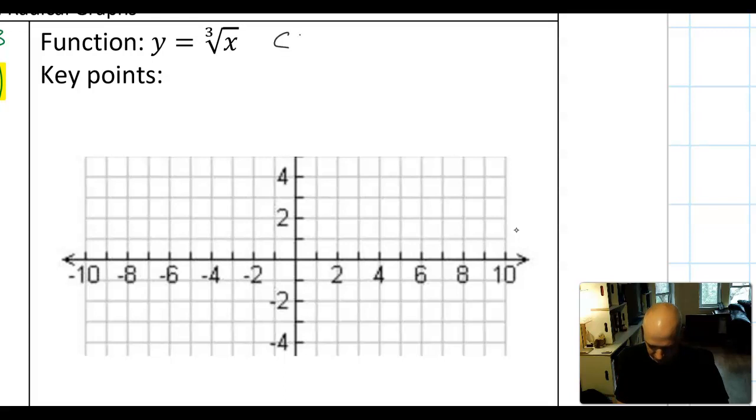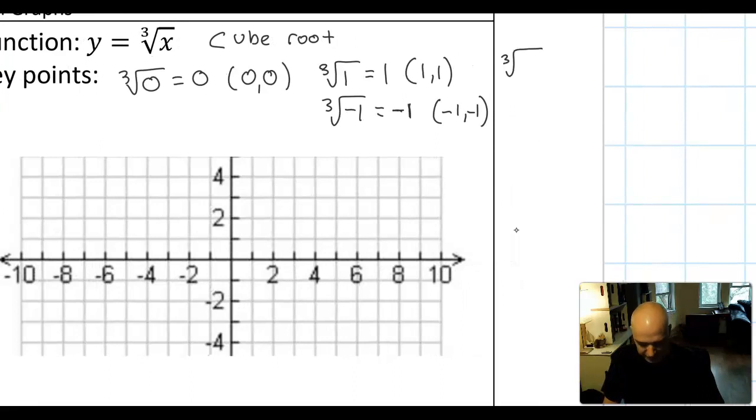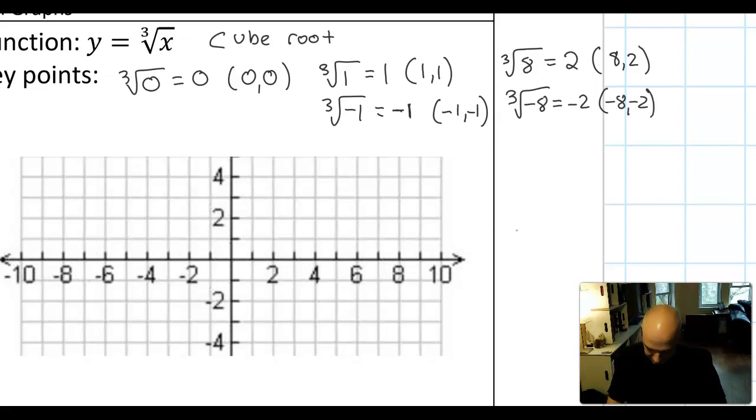So here's our cube root function. This is just called the cube root. It doesn't have a fancy name. And some key points. Well, the cube root of 0 is equal to 0, so we would have the point (0,0). The cube root of 1 is equal to 1, so we'll have the point (1,1). The cube root of negative 1 is the number that when you cube it you get negative 1. Well, that's negative 1. So we'll have the point (-1,-1). And let's find some space. Oh, here's some space. The cube root, we have to go again larger. The cube root of 8 is 2. So that tells us that this graph needs to have the point (8,2). And the cube root of negative 8 is negative 2. So we should have the point (-8,-2). Let's plot all those points and see what we got.